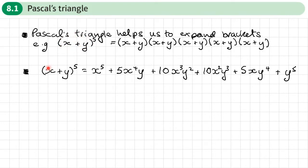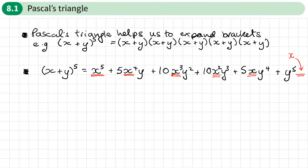I've actually worked out and expanded x plus y to the power of 5 and simplified it. We're going to look for any patterns. The first thing: we start with x to the power 5, and in each subsequent term it goes down — x to the power 4, x to the power 3, x to the power 2, x to the power 1, and finally x to the power 0. So the first term starts with the full power and decreases.